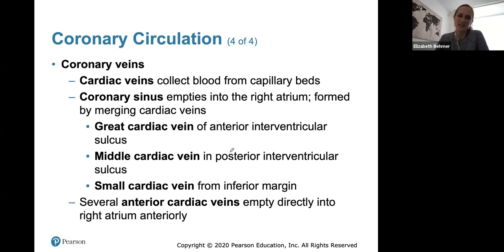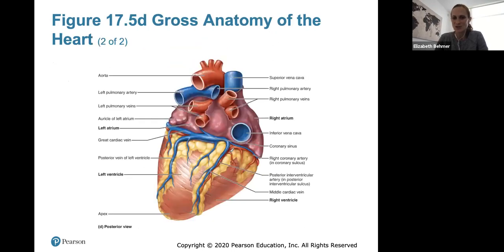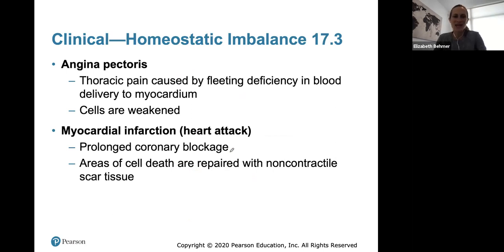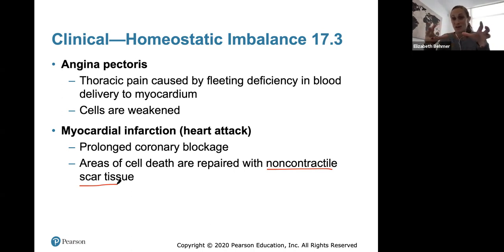All the veins collect blood from capillary beds and return deoxygenated blood from the heart walls back to the heart itself. Here's coronary circulation showing how veins drain blood back into the right atrium. Regarding homeostatic imbalances: angina pectoris is thoracic pain caused by a fleeting deficiency in blood delivery to the myocardium. Myocardial infarction is the actual heart attack — a coronary artery is blocked for a long time, cells die, and they're repaired with non-contractile scar tissue, leaving heart tissue unable to contract or pump.